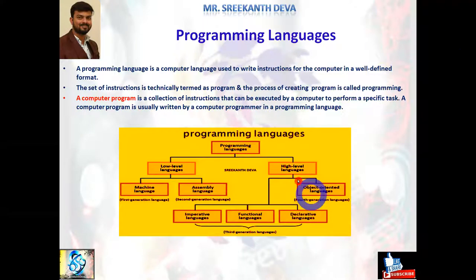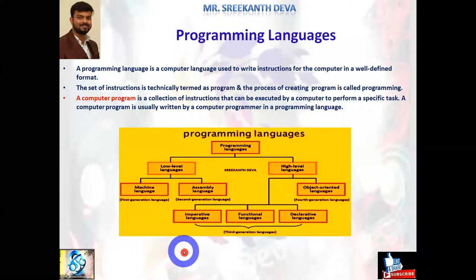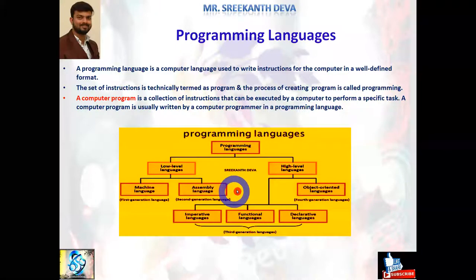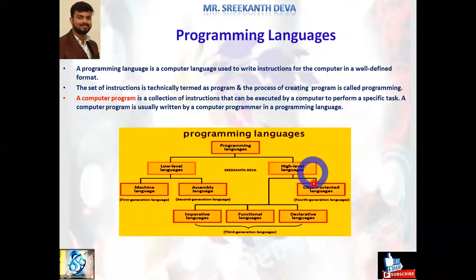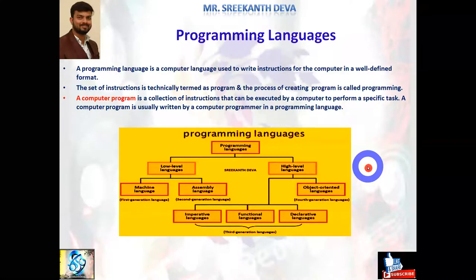We discussed in previous sessions programming languages like low level language, machine level language, assembly level language, and high level languages — like imperative, functional, declarative, and object oriented languages. I explained third, fourth, first, and second generation languages. In this session I will discuss in detail what is imperative, what is functional, what is declarative, what is object oriented language, and the history of those languages.